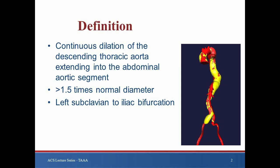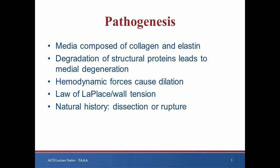Thoracoabdominal aortic aneurysms result from continuous dilation of the descending thoracic aorta extending into the abdominal aorta. Multiple configurations occur anywhere along the continuum from the origin of the left subclavian artery to the iliac bifurcation. Expansion to greater than 1.5 times the normal diameter constitutes aneurysm formation. The medial layer of the aortic wall, comprised mainly of structural proteins such as collagen and elastin, contributes to aortic capacitance and elasticity. Degradation of these structural proteins or a defect in their composition leads to medial degeneration and weakening of the wall. Subsequent dilation results from hemodynamic forces on the arterial wall as well as intrinsic changes in the composition of the wall itself.